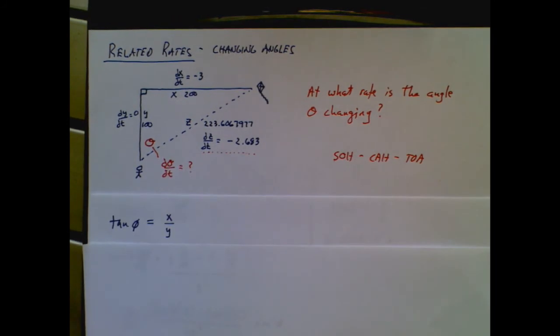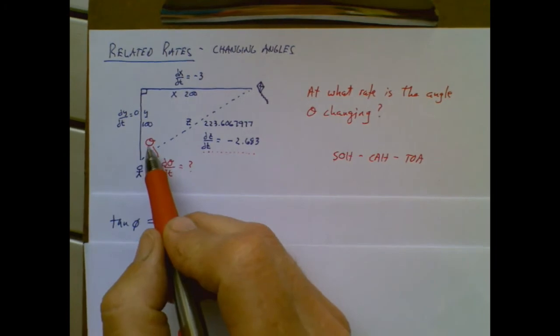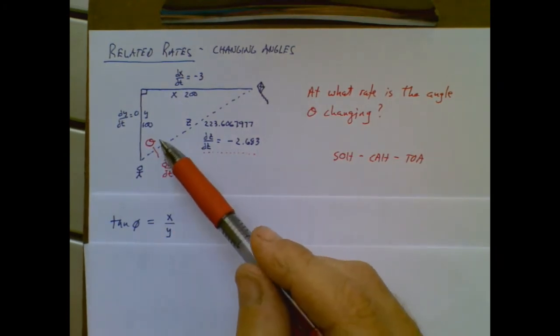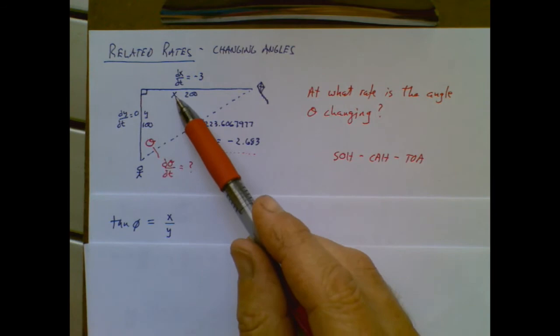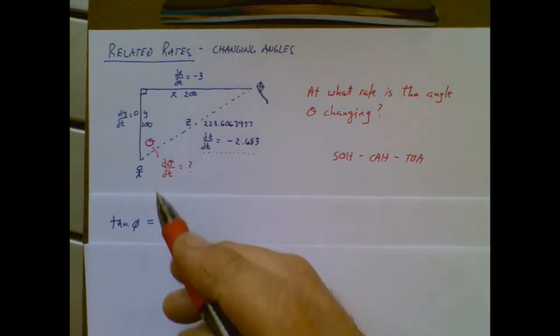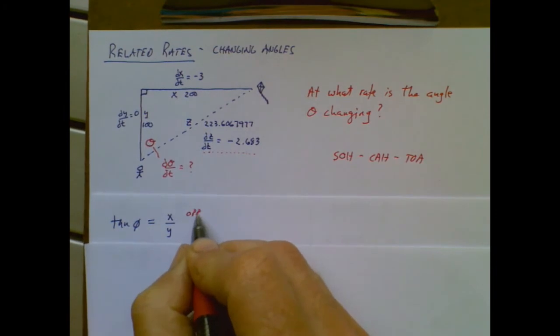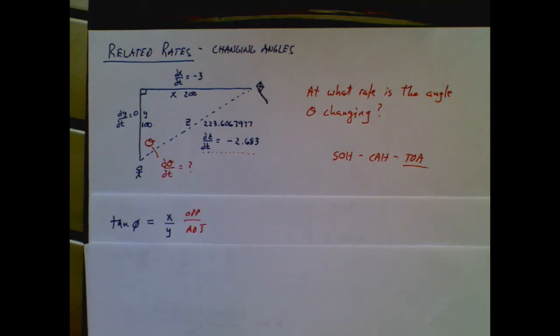And there we go. I've selected tangent. The tangent of theta is the opposite over the adjacent. So what we have here is opposite over adjacent, from the good old Chief Sokotoa, from the geometry years.